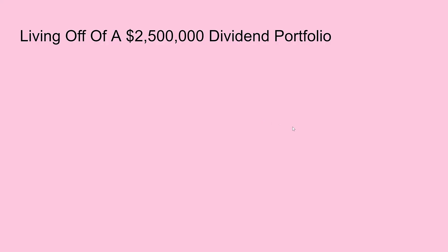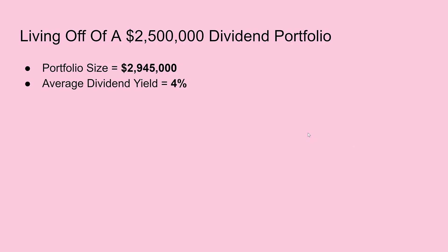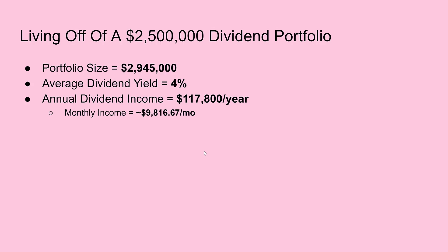Let's talk about living off of a 2.945 million dollar dividend stock portfolio. That's the portfolio size I'm aiming for. I want an average dividend yield of four percent. My current dividend yield is about 2.7 percent and may fall lower, because right now I'm aiming for low-yield, higher-growth positions to get a higher yield on cost. As I get closer to the time when I plan to live from my portfolio alone, I'll sell off lower-yield stocks and add more higher-yield ones. The target annual dividend income is about one hundred seventeen thousand eight hundred dollars a year, or about nine thousand eight hundred sixteen dollars a month.